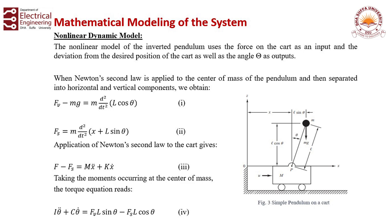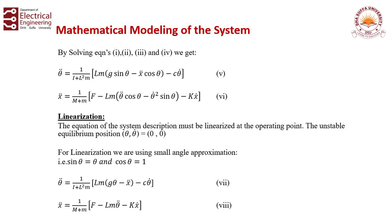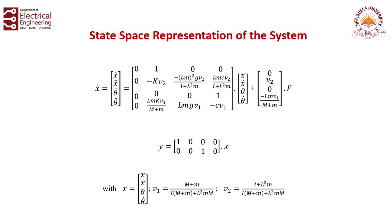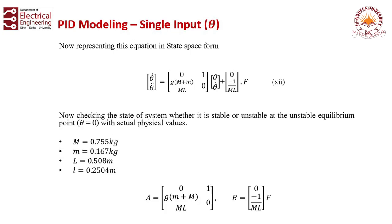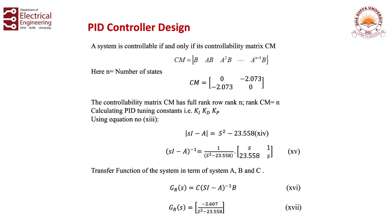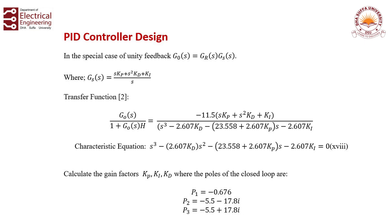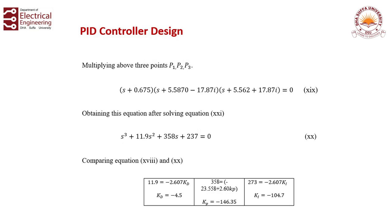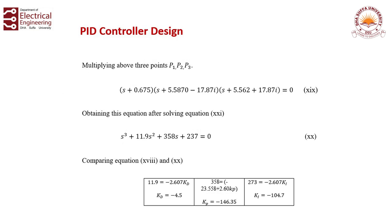We have derived a non-linear model. After that, approaches have been used to linearize this system and make it usable, because we have non-linear control approaches. We have used PID control so that this system can be stabilized. As you can see, we have done PID completely working, and the parameters have not just been tuned — in fact, they have been derived mathematically. This can also be seen in the results.